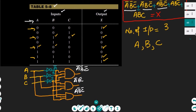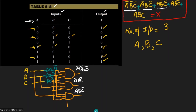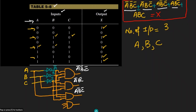For the fourth AND gate, I implement A B C complement. A and B are both uncomplemented, so they are taken directly from the input lines, while C is complemented and taken from the inverter output. The output of this gate is A B C complement.